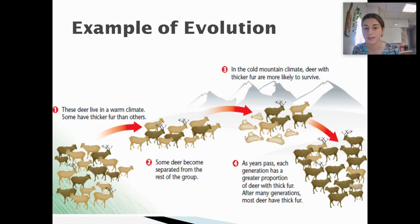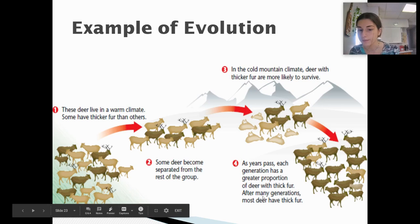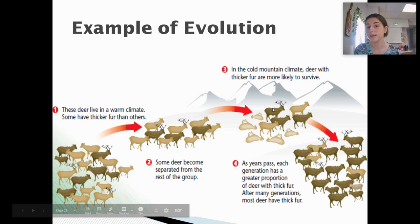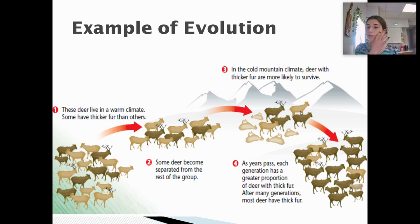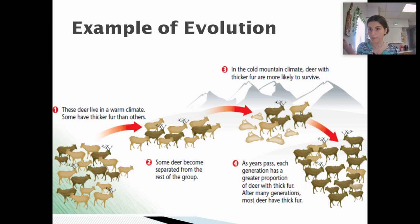As you can see, the deer without thick coats unfortunately died because it got so cold, but the deer who had the trait for thick fur were able to survive. As years pass, each generation has a greater portion of deer with thicker fur, and after many generations, most deer have thick fur. This trait was favorable, so these deer were the fittest in their environment — they survived and passed that favorable trait on to their offspring.